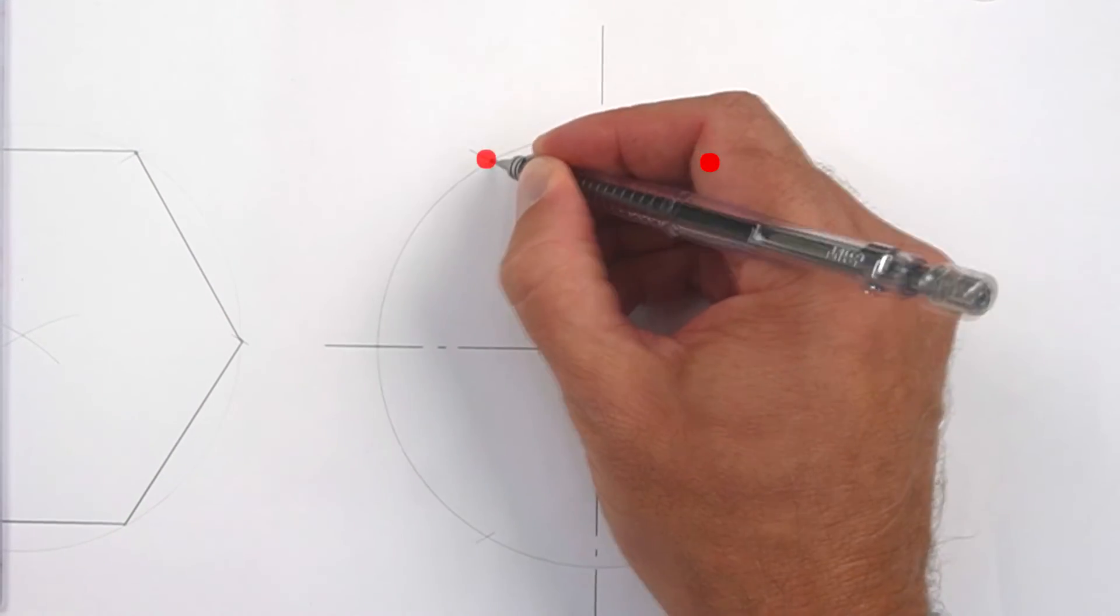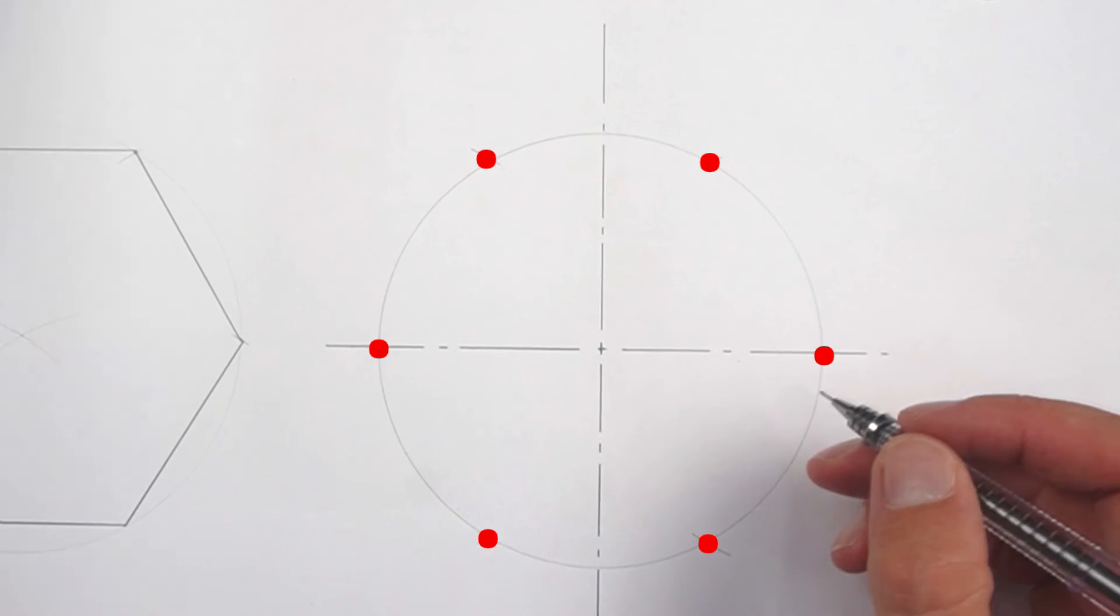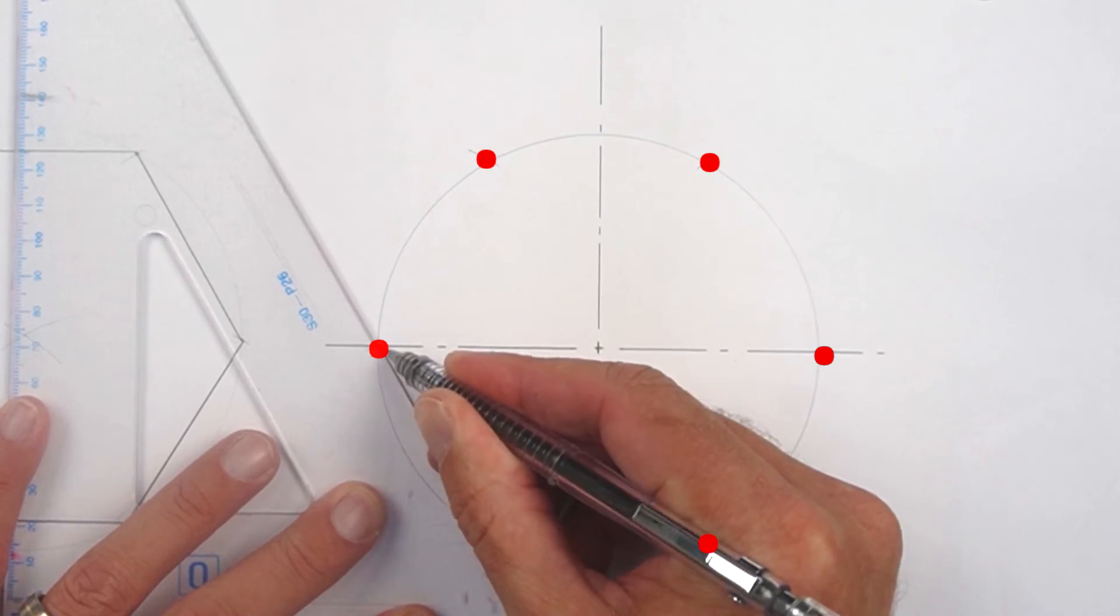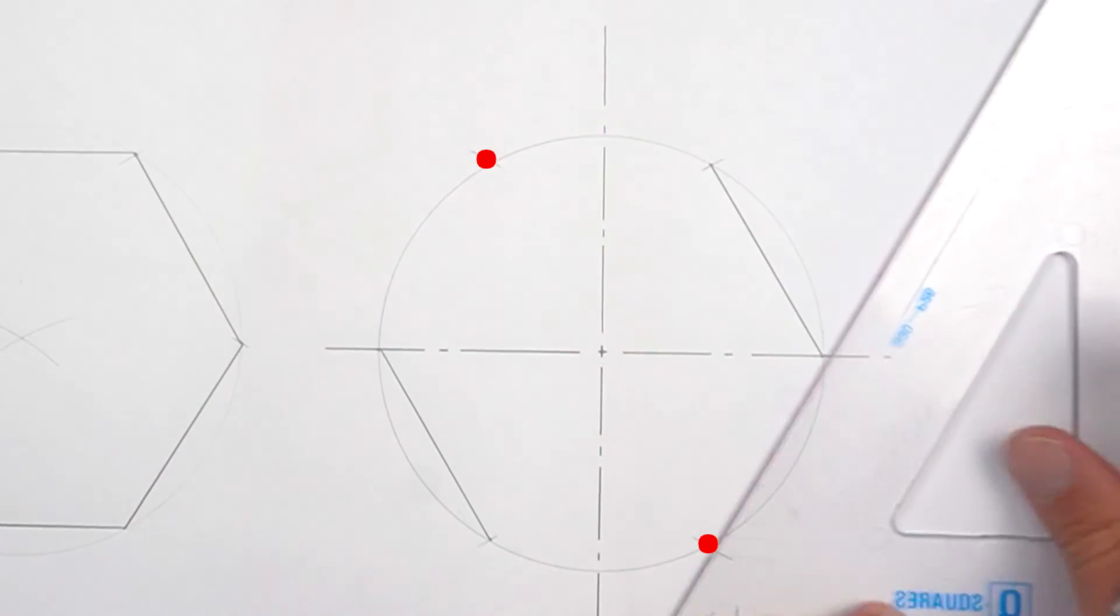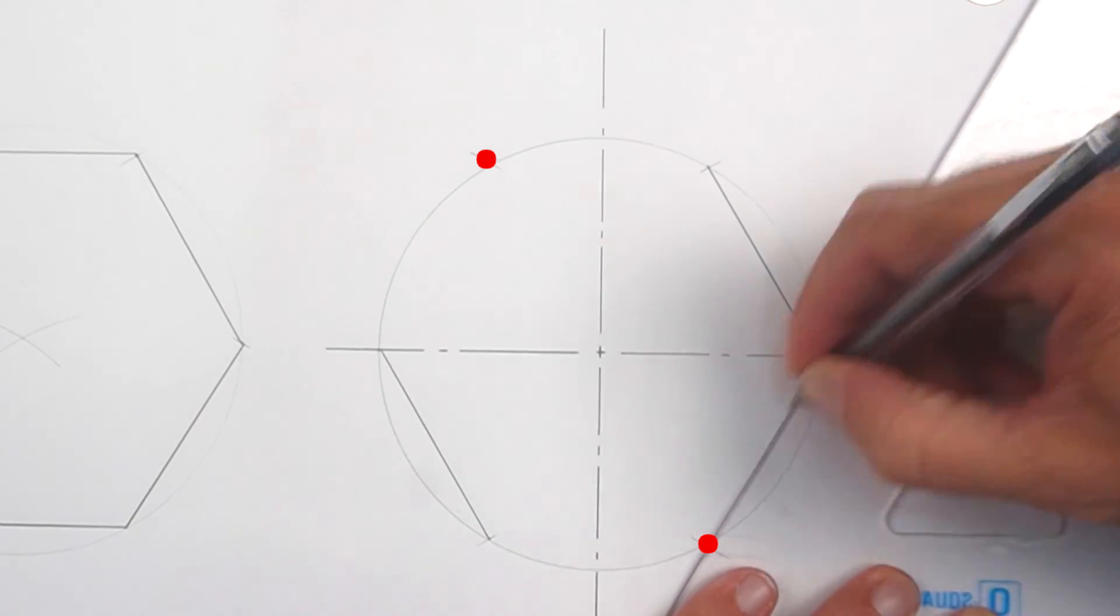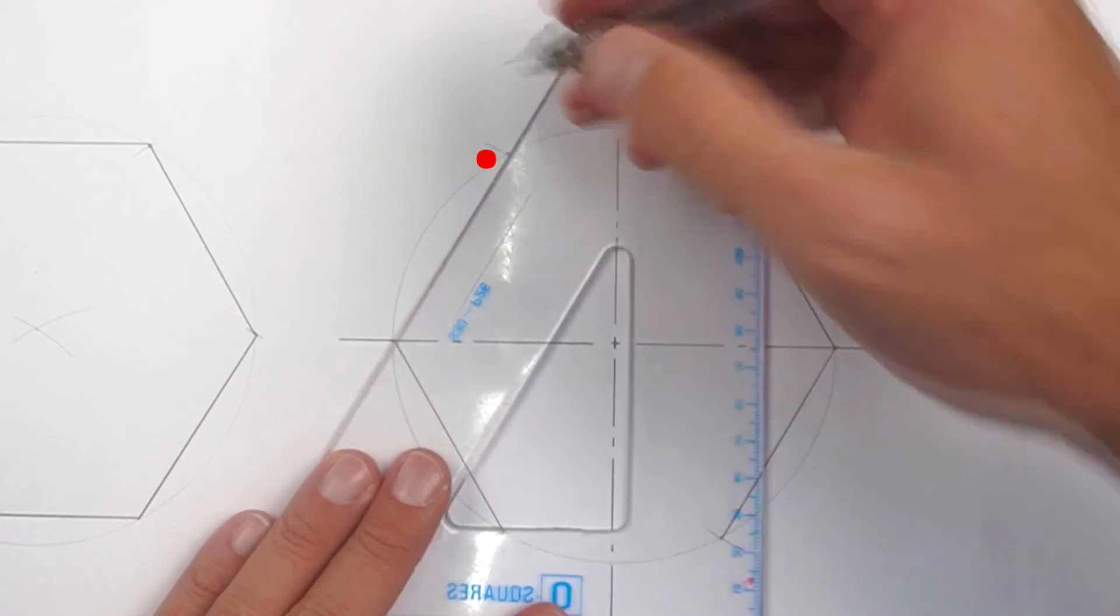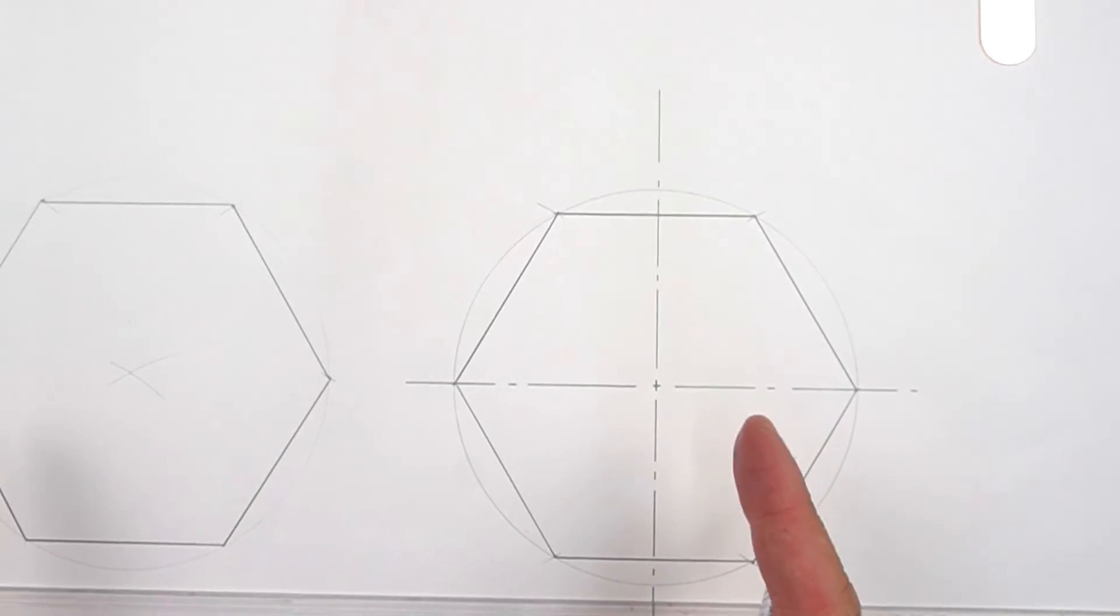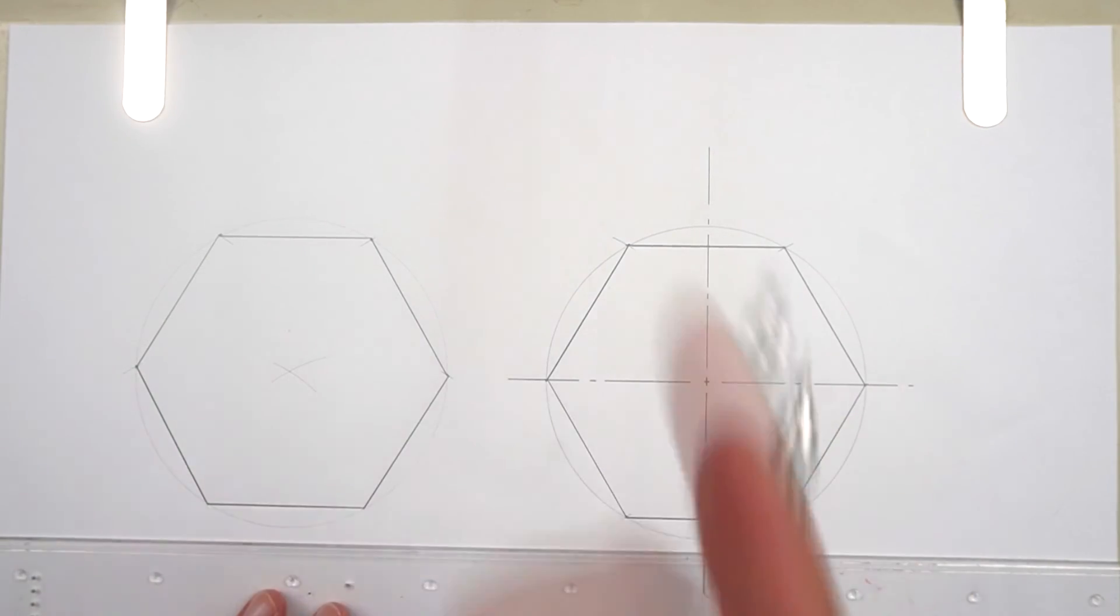With your triangle, you can draw that in. So these are two same but different ways of drawing a hexagon. Now it's your turn.